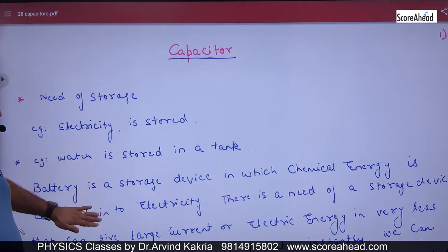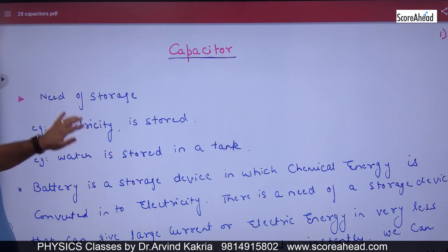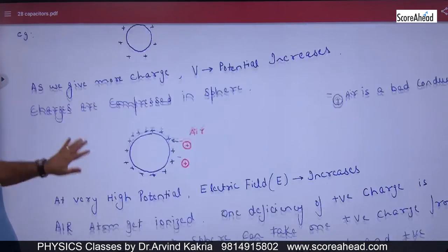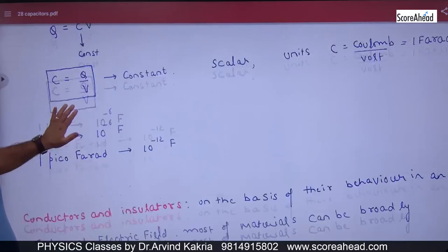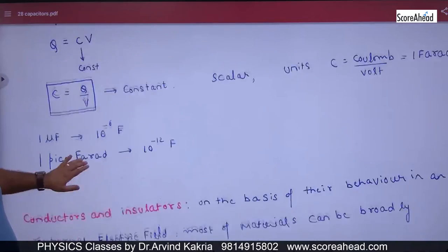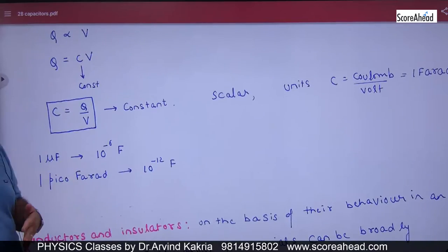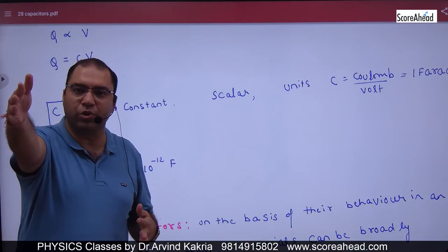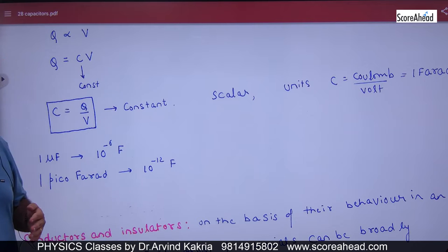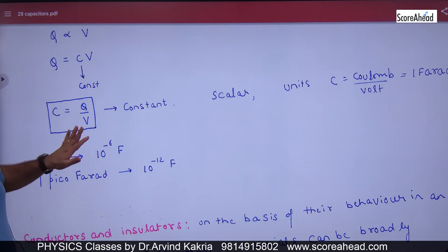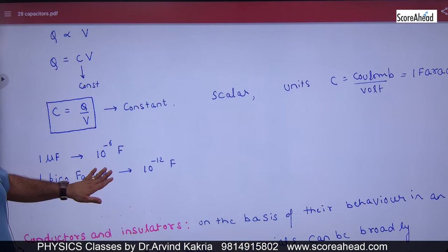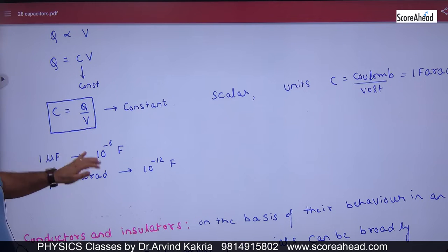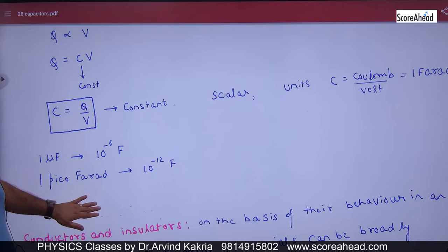A capacitor is a storage device — point number 1. In the capacitor, if we see the formula, that will be equal to Q divided by V. We have this formula from last time: capacitance C is equal to Q divided by V.